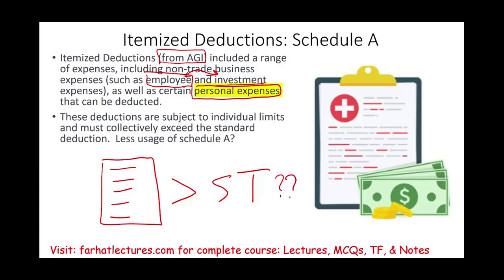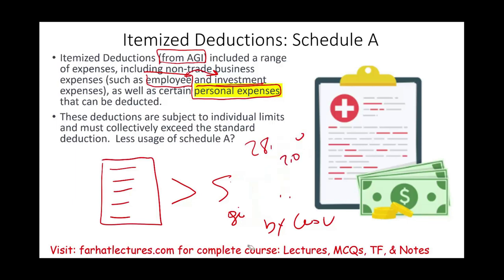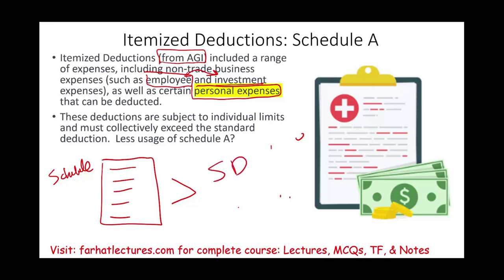How much is the standard deduction? The standard deduction is a number given by the government every year — for example, $28,000 or $32,000 (those numbers are illustrative). You would only use Schedule A if your itemized deductions are greater than the standard deduction; otherwise, you simply take the standard deduction.